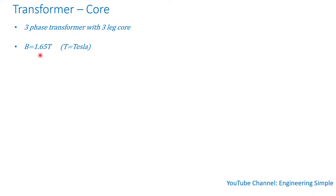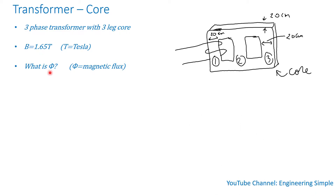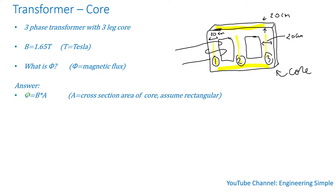The flux density is 1.65 Tesla. Let's assume we have a three-leg core — here's one leg, there's another leg, there's another leg, this is the top yoke and this is the bottom yoke that joins the core legs. We know that the magnetic flux is equal to flux density times the cross-section area of the core. Let's assume the core is rectangular, so the cross-section area is 20 centimeters times 20 centimeters, which is 0.04 meters squared.